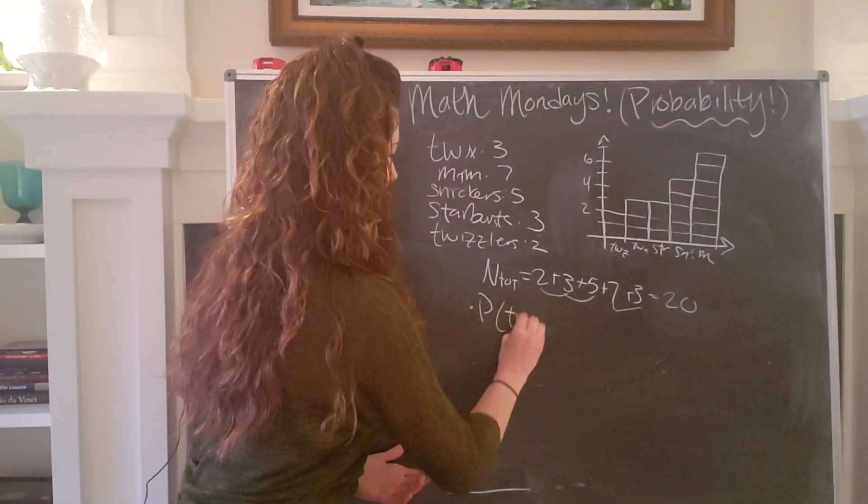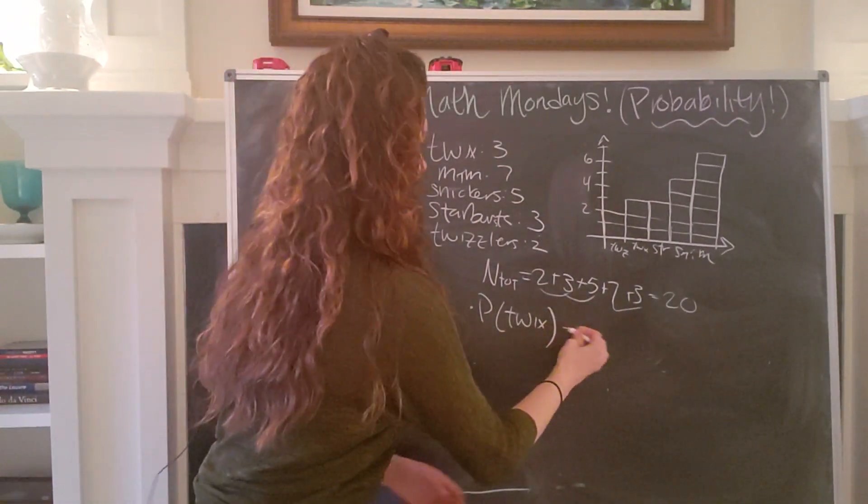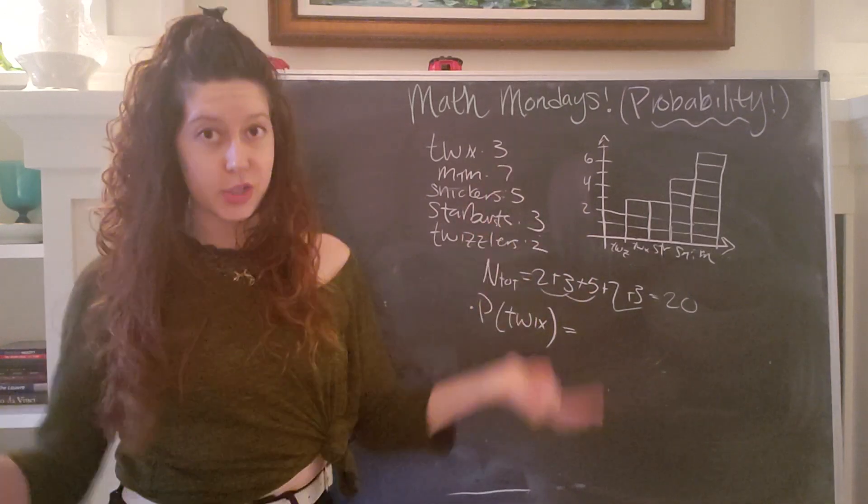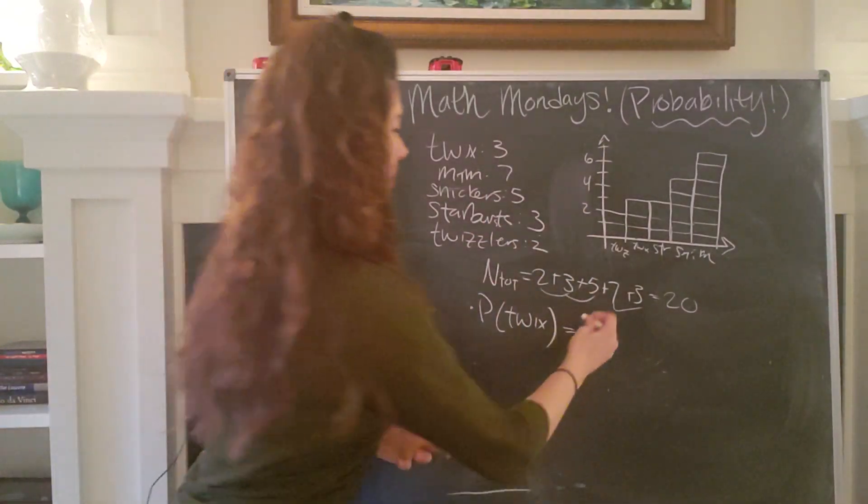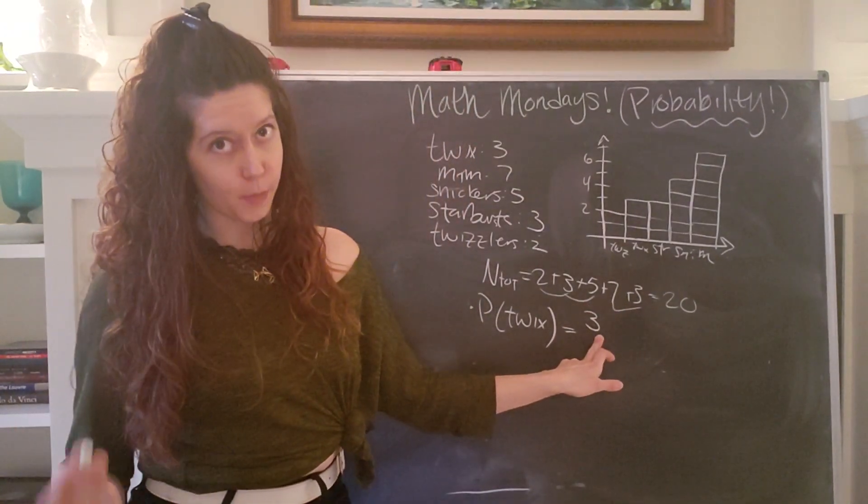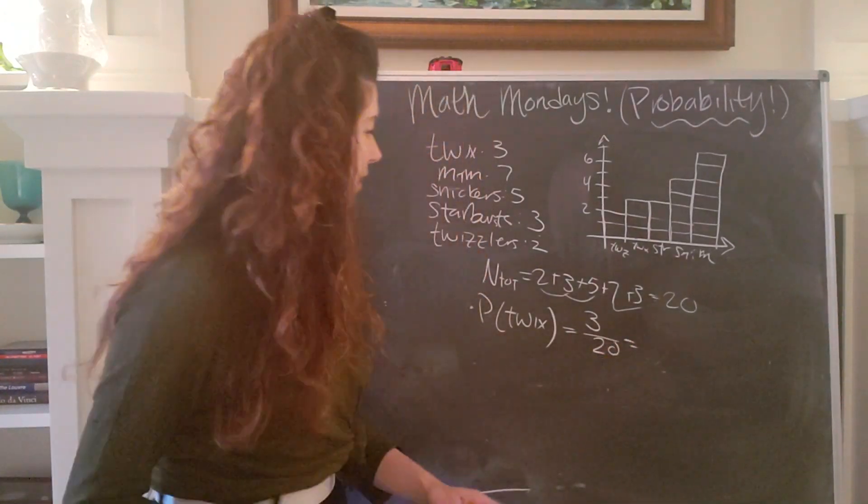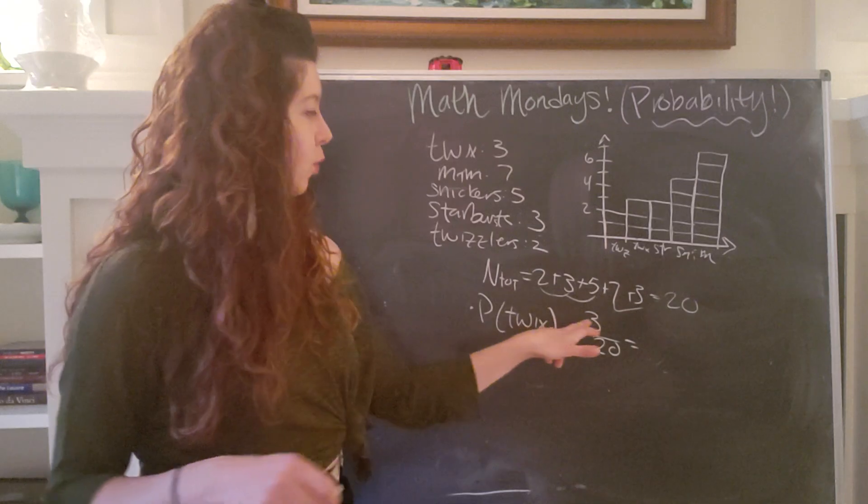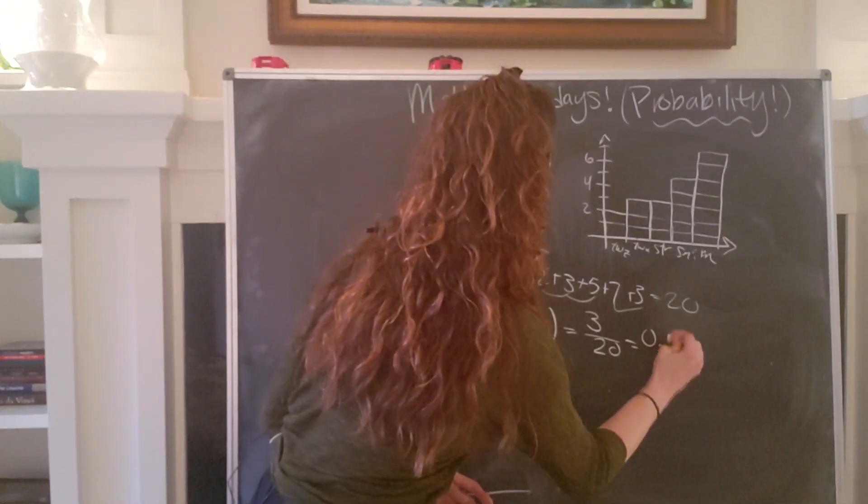So then I could say, okay, what is the probability, or P for short, let's be lazy, what is the probability of pulling out a Twix? Well, there are three Twix out of a total of 20 possible pieces of candy. So that means that we have three opportunities to pull out a Twix out of 20. And to simplify this into probability terms, we divide three by 20 to get 0.15.